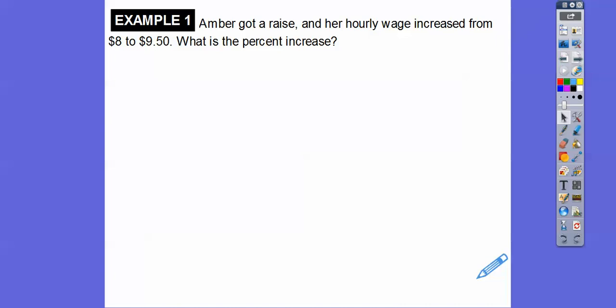So here we go. Amber got a raise. Her hourly wage increased from $8, that's the original number, to $9.50. What's the percent increase? We've got to first find the amount that they changed. The amount that they changed is the bigger number minus the smaller number. So 9.5 minus 8 is $1.50.